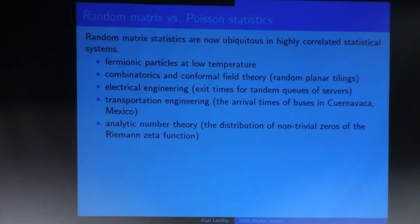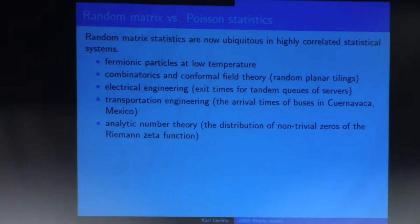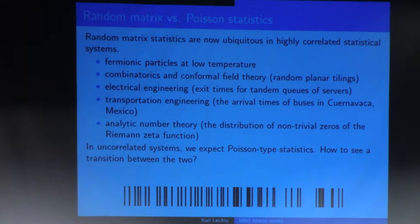Why is this interesting? For 50, maybe 60 years, we've seen that random matrix-type statistics are showing up in many different models of highly correlated statistical systems. Here are some examples: fermionic particles at low temperature; things showing up in combinatorics and conformal field theory, namely in tiling problems; in electrical engineering, the exit times for customers in queues; the arrival times of buses in a certain city in Mexico; and even in analytic number theory, the famous Montgomery conjecture about the distribution of non-trivial zeros of the Riemann zeta function. Those show up a lot in correlated systems.